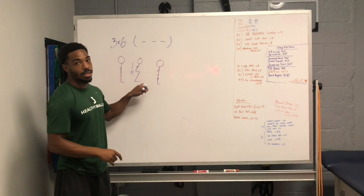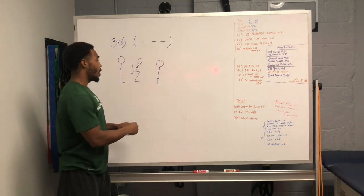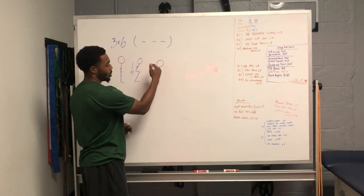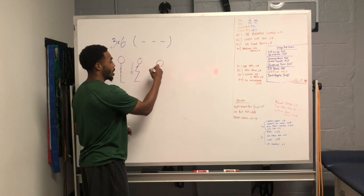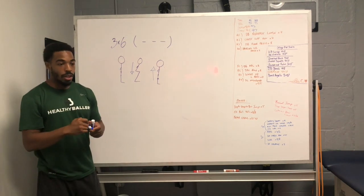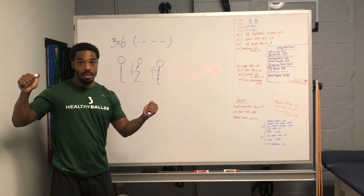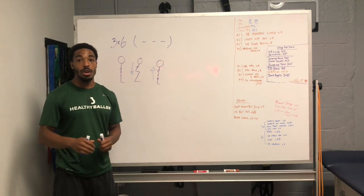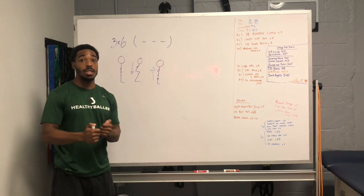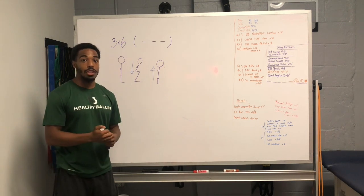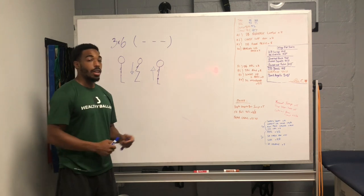Going from the bottom back up to the finishing position is the concentric. So: eccentric means the muscle is lengthening, isometric means there's no change in joint angle and therefore no change in muscular length, and concentric means the shortening of the muscle.